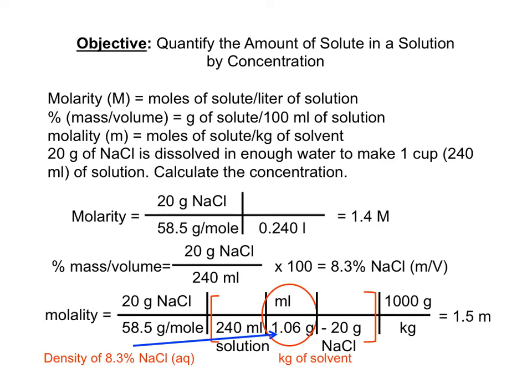Volume of solution times density of solution gives us the mass of the solution. The mass of solute plus the mass of solvent gives us the mass of solution. We just calculated the mass of solution; subtract the mass of salt (the solute), and that gives us the mass of solvent. So the molality of the solution is 1.5 molal, which means 1.5 moles of NaCl in 1 kilogram of water, the solvent.